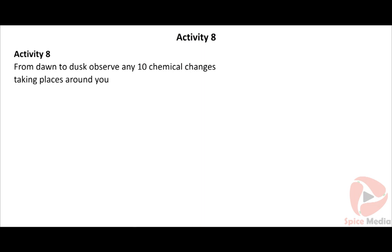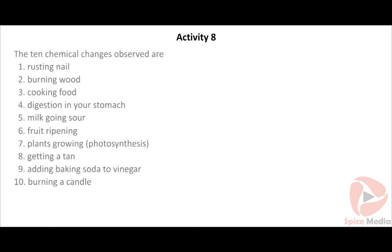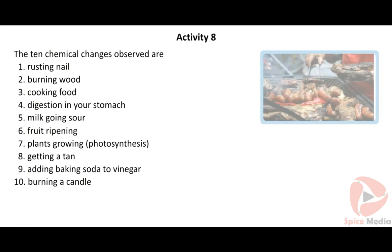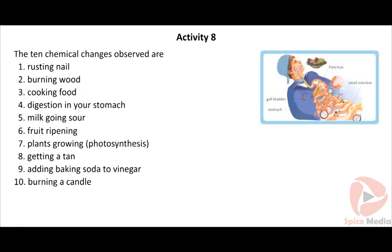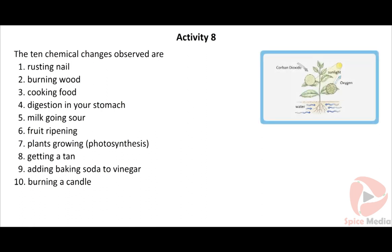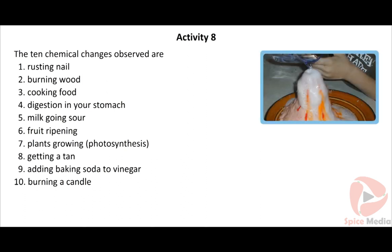Activity 8: From dawn to dusk, observe any 10 chemical changes taking place around you. The 10 chemical changes observed are: rusting nail, burning wood, cooking food, digestion in your stomach, milk going sour, fruit ripening, plants growing, photosynthesis, getting a tan, adding baking soda to vinegar, and burning a candle.